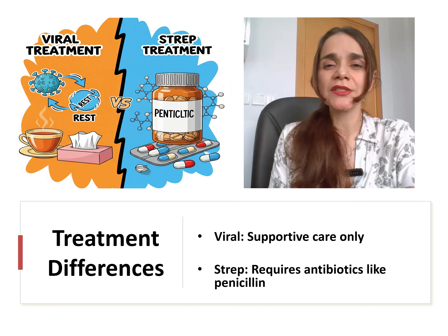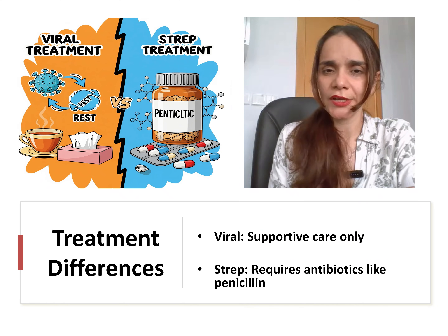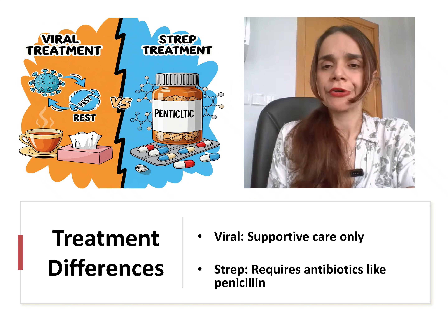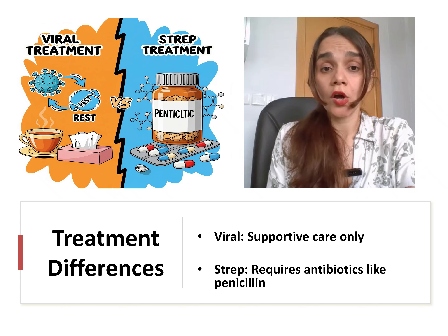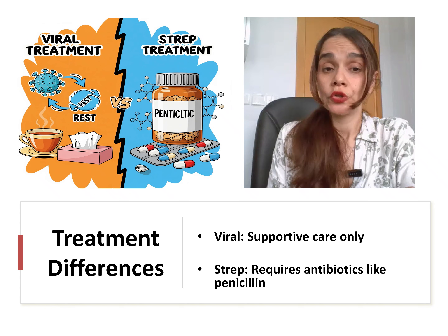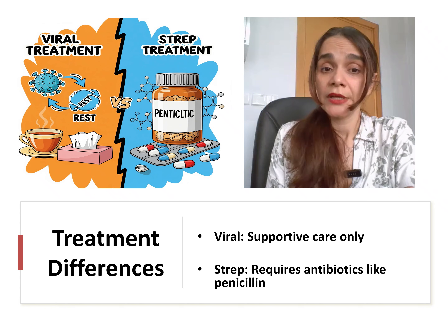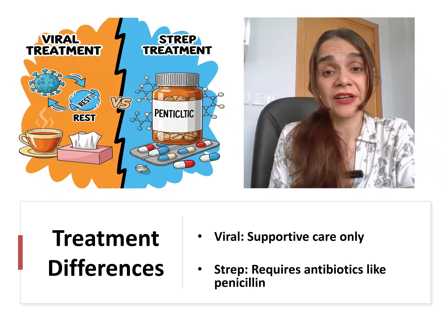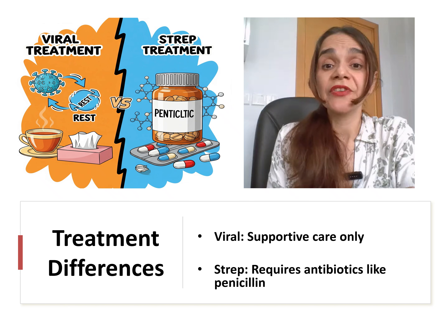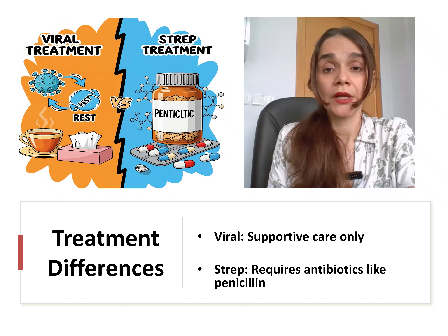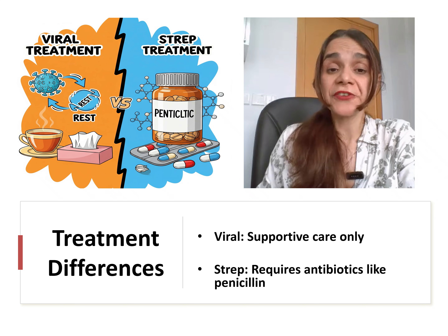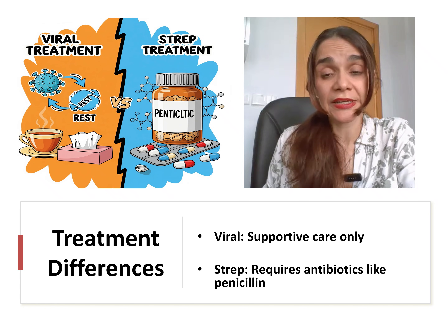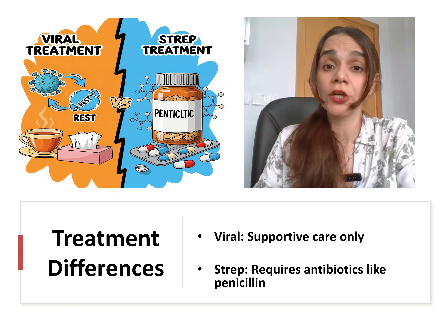Treatment entirely depends on the cause. Viral pharyngitis doesn't need any antibiotics — just supportive care like fluids, rest, and pain relievers if needed. Strep throat, however, should be treated with antibiotics for three important reasons: first, to shorten the illness; second, to reduce transmission; and third, and most importantly, to prevent serious complications like rheumatic fever and kidney disease. Knowing the difference helps us treat appropriately and protect both the individual and the community.